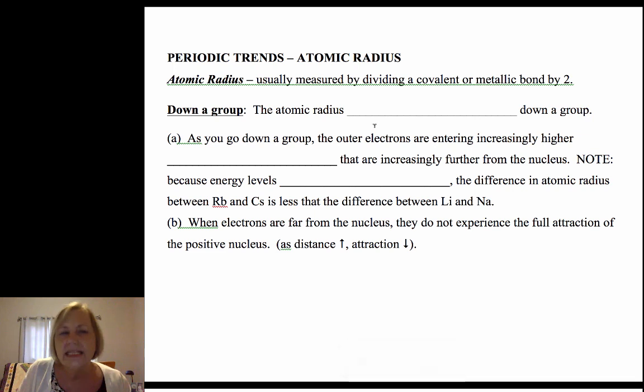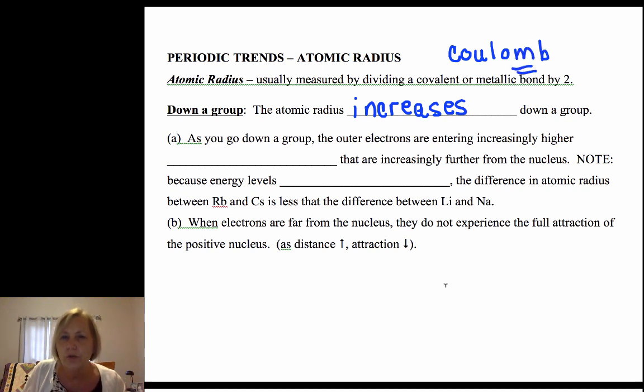Now why does it increase down a group? So atomic radius increases down a group. The biggest reason—and by the way, Coulomb's law is such a big help here—think Coulomb's law.